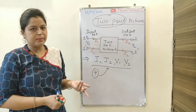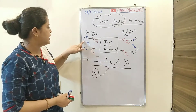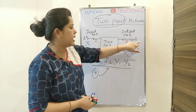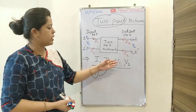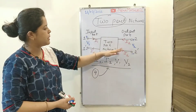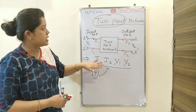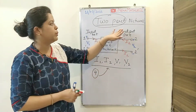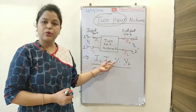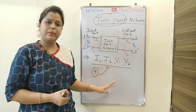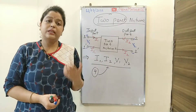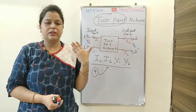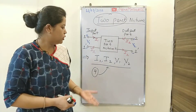Since this is the first port, we denote it as 1 and 1-dash, and since this is the second port we denote it as 2 and 2-dash. We again have four variables: I1, I2, V1, and V2 with respect to these two ports. Now, out of these four variables we can consider any two variables as dependent variables while the remaining two are treated as independent variables, depending on the type of port parameters we are discussing.